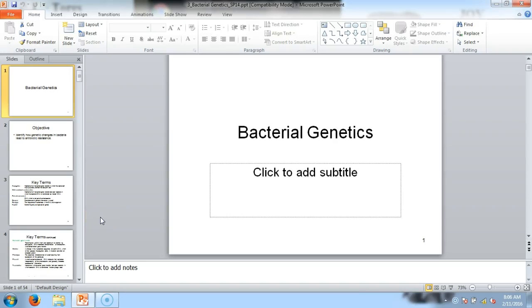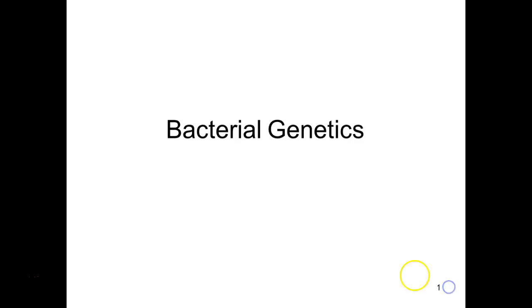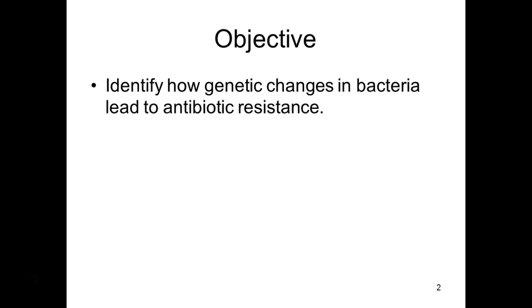For genetics, we're focusing on bacterial genetics, and one of the main reasons we talk about that is because it leads to this ability to genetically change — it leads to a lot of the antibiotic resistance that we see. This is important in understanding how that phenomenon happens: how a bacteria becomes resistant to antibiotics, and how that information is shared with other bacteria.